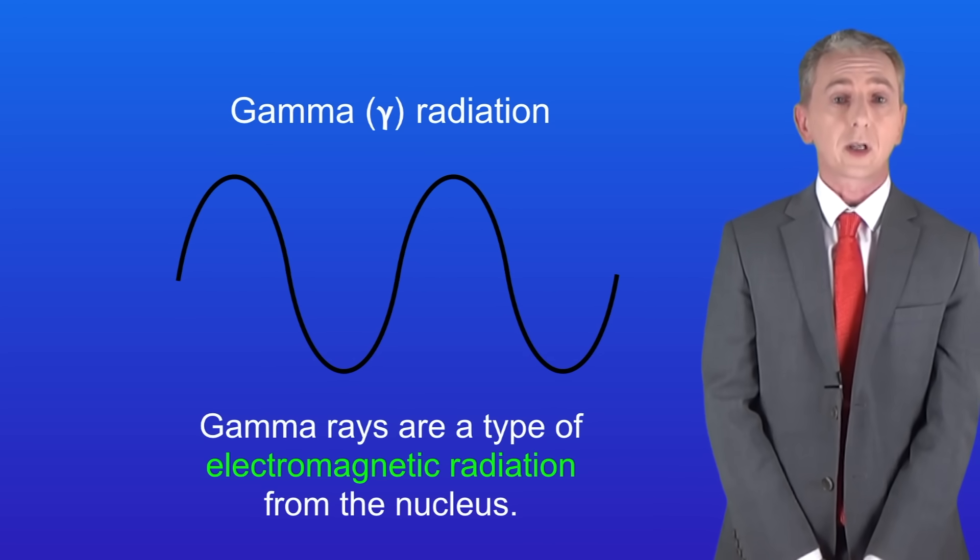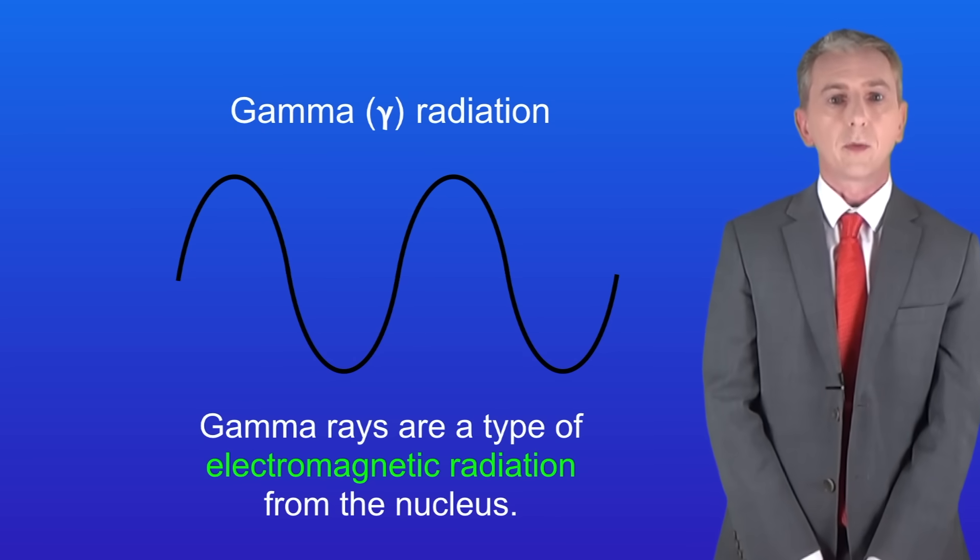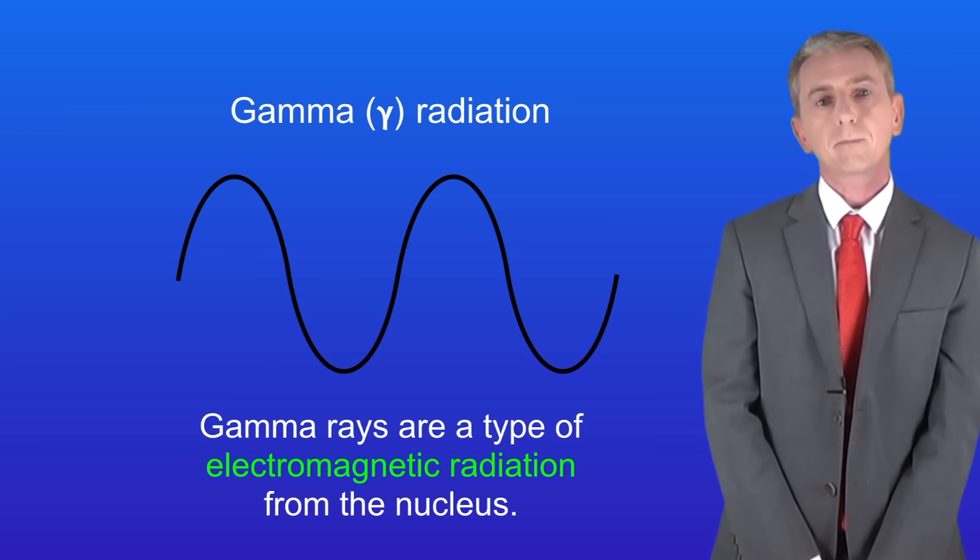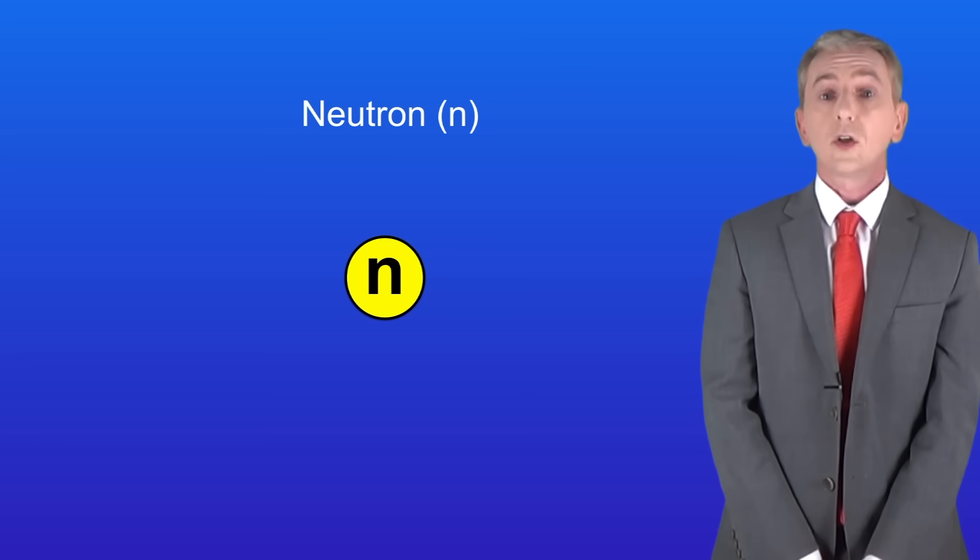Okay the third type of radiation is called a gamma ray. Gamma rays are not particles, they're a type of electromagnetic radiation from the nucleus. Finally the fourth type of radiation that's sometimes given out by unstable nucleus is a neutron.